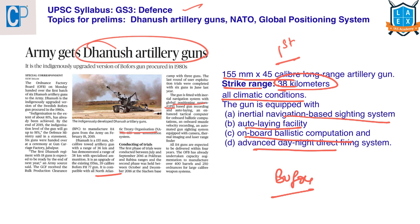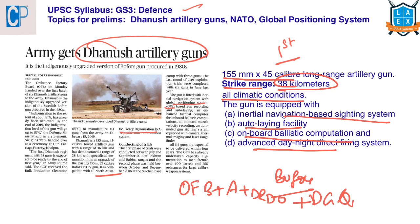Dhanush is a joint effort by the Ordnance Factory Board, the Army, the Defence Research and Development Organisation (DRDO), the Directorate General of Quality Assurance, and PSUs like Bharat Electronics Limited (BEL) along with other private firms.